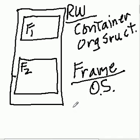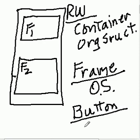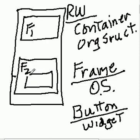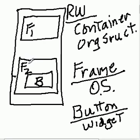And then we have a button. What's a button? A button is a widget. So let's draw a button right here — I'll put a B on it. Now this button is a child of frame two. So frame two is the parent of this button child. But frame two itself is a child of its container, which is the root window.